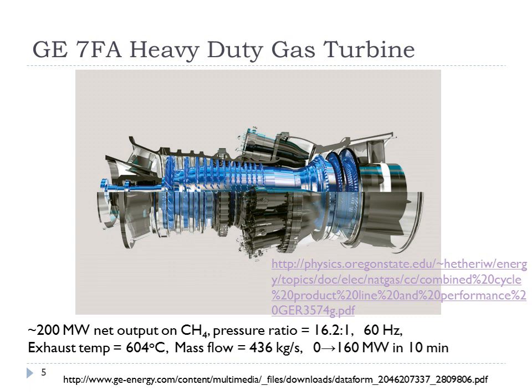GE quotes that this turbine can go from 0 to 160 megawatts in 10 minutes. This is what I meant before — if you owned one of these turbines, you could get paid for just sitting around doing nothing but promising to turn on during a blackout or times of high demand. These hot exhaust gases at 600°C are often coupled with Rankine cycles to generate additional electricity via steam turbines.